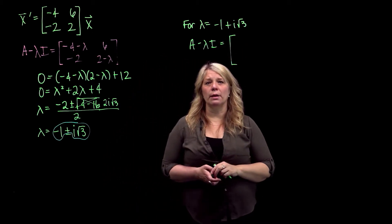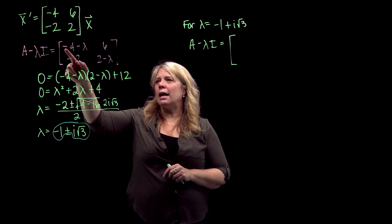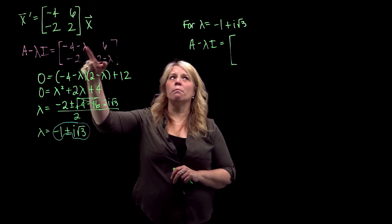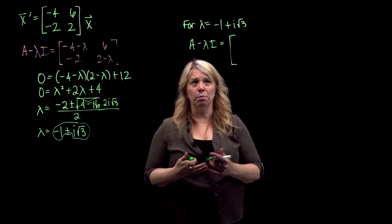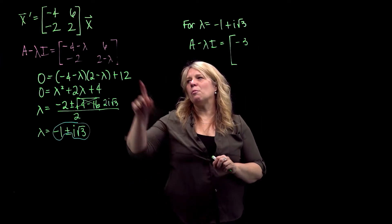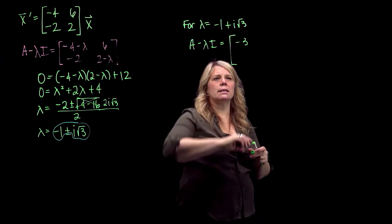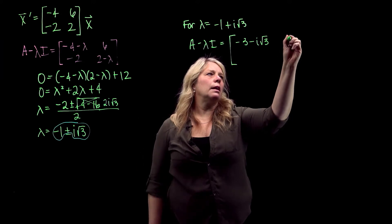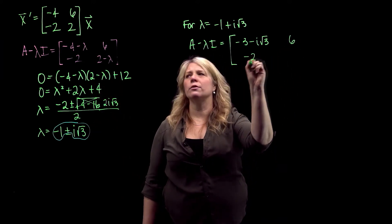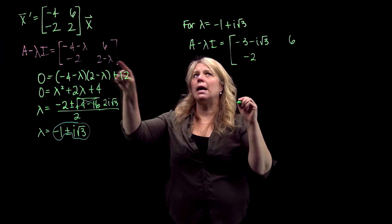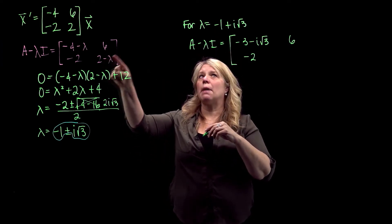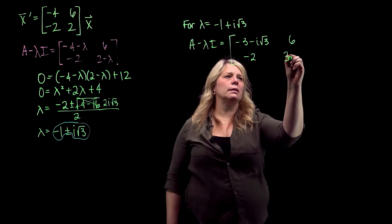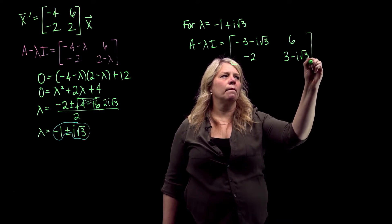Be careful with all of the subtractions. For the top-left entry: negative 4 minus negative 1 gives negative 3, and then minus i√3. Then there's the 6, and negative 2. For the bottom-right entry: 2 minus negative 1 is 3, and then minus i√3.